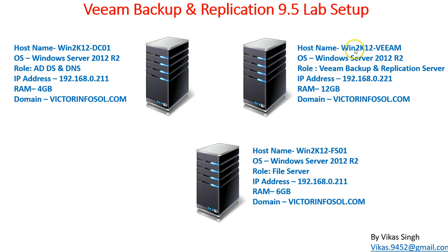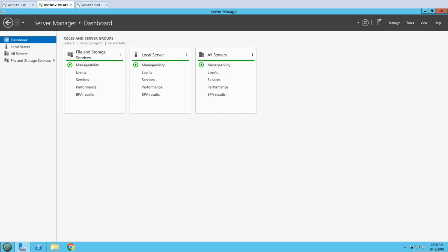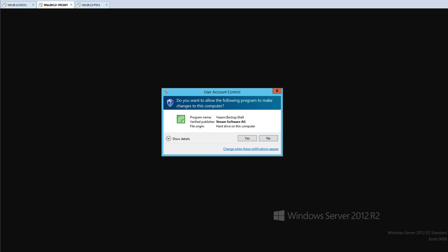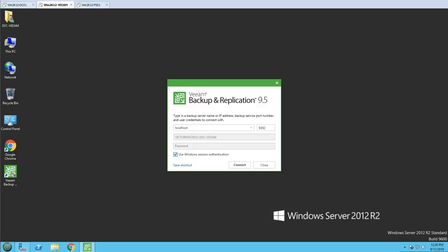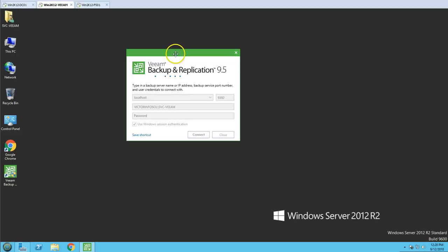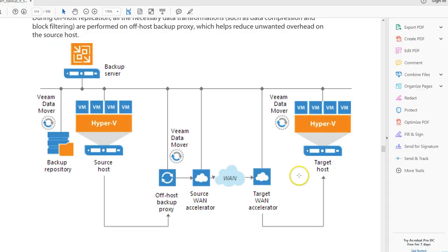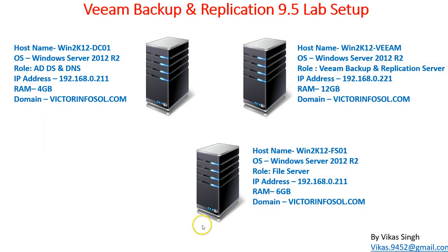Then we have a Veeam server which is Veeam2k12-Veeam - this is our Veeam Backup and Replication server. We are using both machines as in the second video, and I'm going to connect to the Veeam Backup and Replication console. The last machine we have is a file server, Veeam2k12-FS01, which is a Windows 2012 R2 file server.